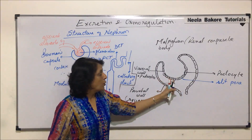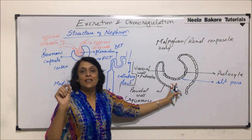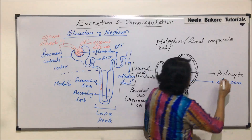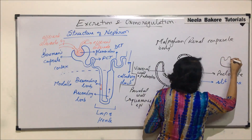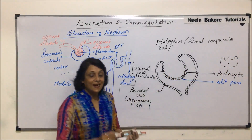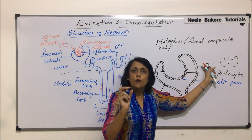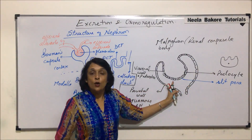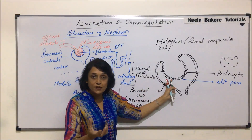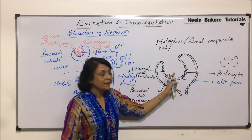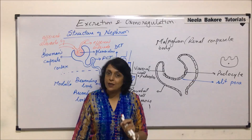Podocytes have finger-like or pseudopodia-like structures — 'podo' or 'podium' refers to foot-like structures, so there are projections. So Bowman's capsule has two distinct layers: it is a double-walled cup-like structure. The inner visceral membrane is made up of podocytes, and the outer parietal membrane is made up of simple squamous epithelium.